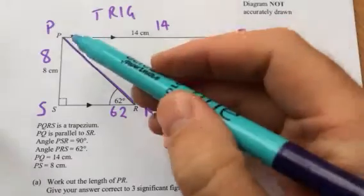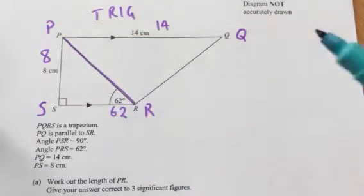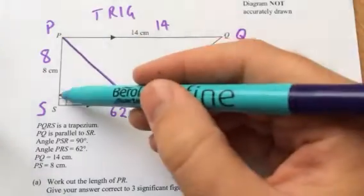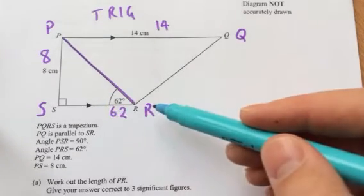We've got a trapezium here, PQRS. We know it's a trapezium because one pair of opposite sides are parallel. And it's a right angled trapezium. They tell us some information. PQ is parallel to SR.